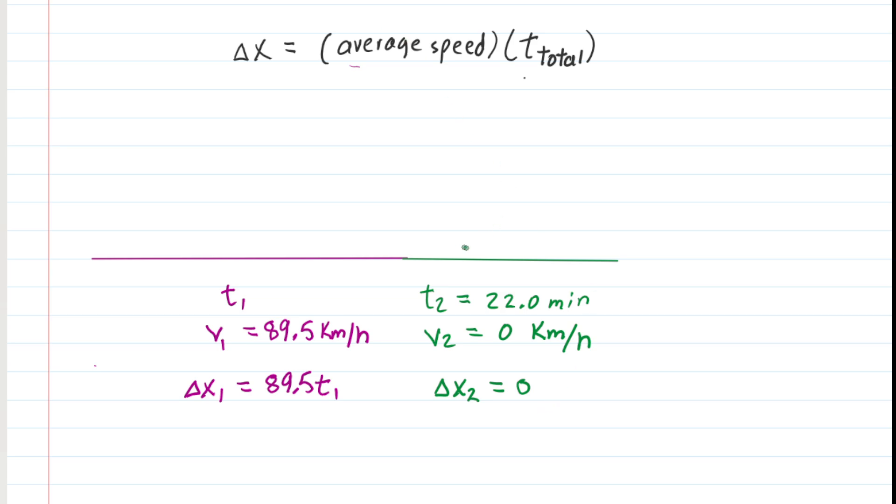The next thing we need to do is change the 22 minutes into hours. And the reason for that is because the speeds are expressed in terms of kilometers per hour. So take your calculator out and take 22 minutes and divide that by 60 minutes per hour, you're going to get 0.367 hours. So let's make that adjustment.